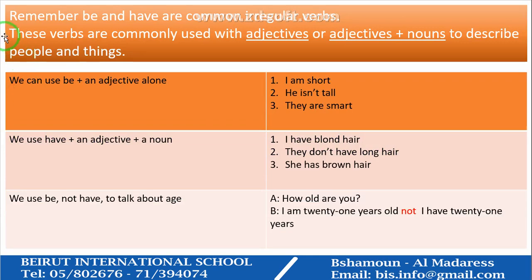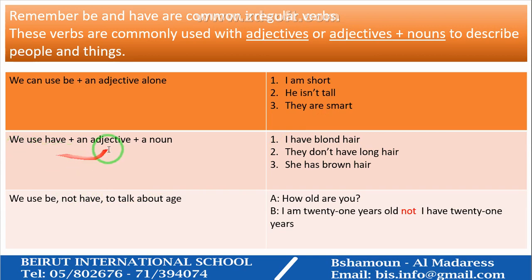Remember, BE and HAVE are common irregular verbs. These verbs are commonly used with adjectives or adjectives plus nouns to describe people and things. We can use BE plus an adjective alone: 'I am short', 'He isn't tall', 'They are smart.'